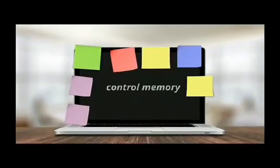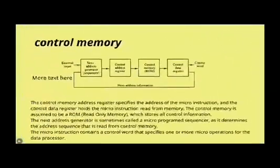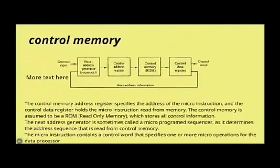We will talk about control memory. The control memory address register specifies the address of the micro-instruction, and the control data register holds the micro-instruction read from memory. The control memory is assumed to be a read-only memory, which stores all control information.